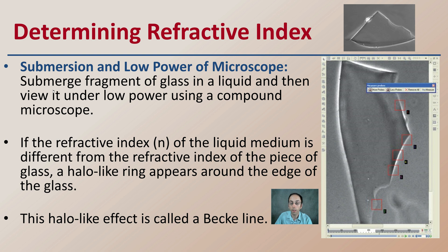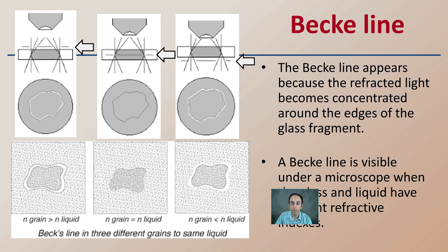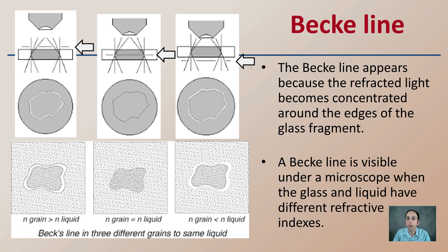That halo-like effect is called the Beck line. It appears because refracted light becomes concentrated around the edges of the glass fragment. A Beck line is visible under a microscope when the glass and liquid have different refractive indices.